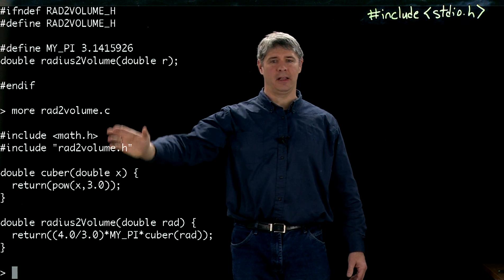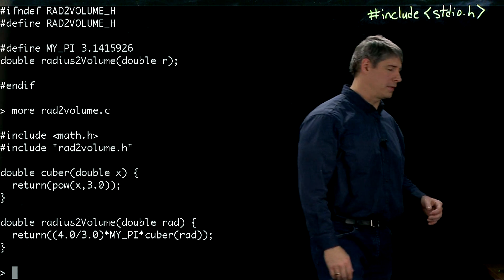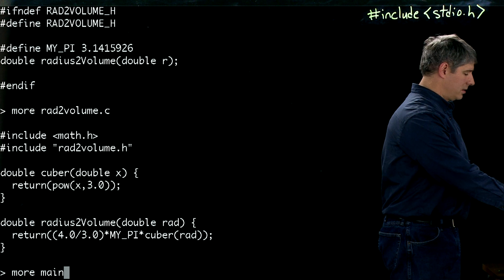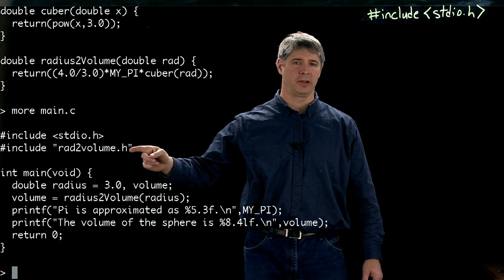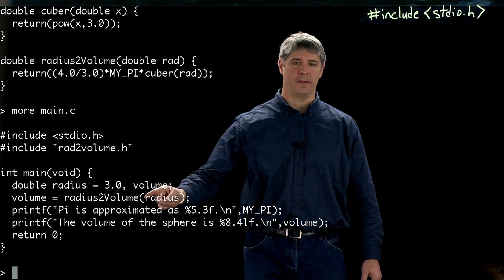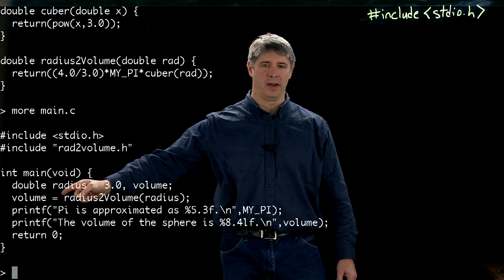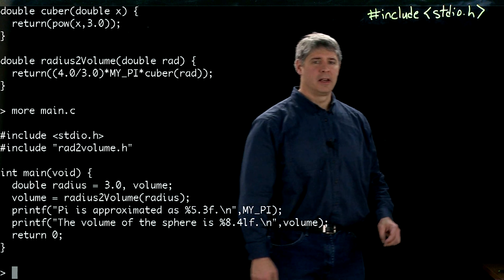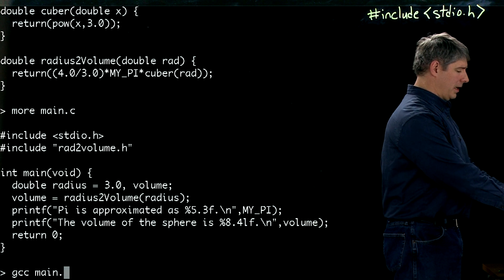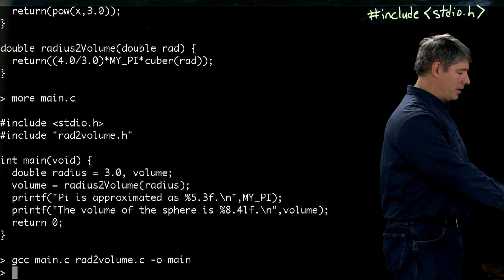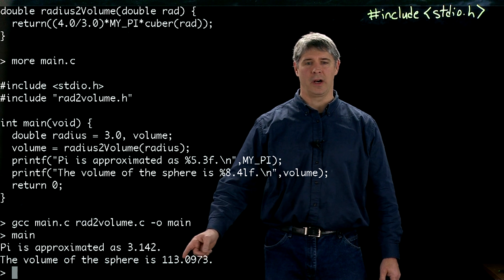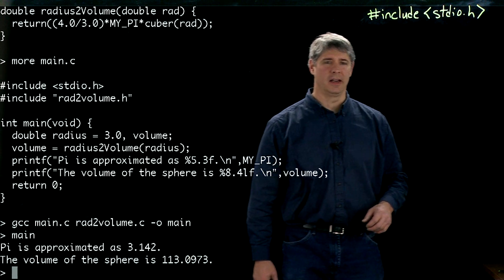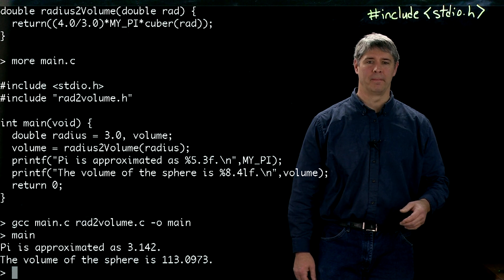Here's main.c, which includes both the standard input output library and the rad_to_volume header. Within its main function, it uses radius_to_volume to calculate the volume and then prints out MY_PI as well as the computed volume. To compile this, we run `gcc main.c rad2volume.c -o main`, it compiles, we run it, and it prints out the value of pi from the header file as well as the volume calculated using the library's radius_to_volume function.